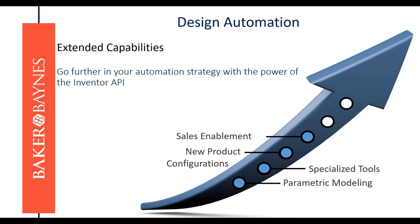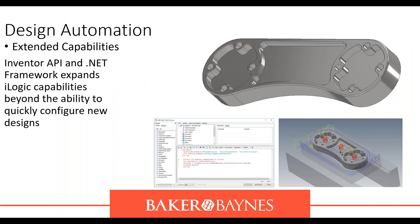With the Inventor API and Visual Basic .NET, the possibilities to automate become endless. Go beyond configurations — automate engineering processes. The API is very powerful: it provides the ability to automate almost anything you see in the user interface of Inventor. It takes you beyond the basics — automate repetitive tasks, set up design rules, check drawings, handle ERP and MRP integrations, and create your own add-ins for Inventor.